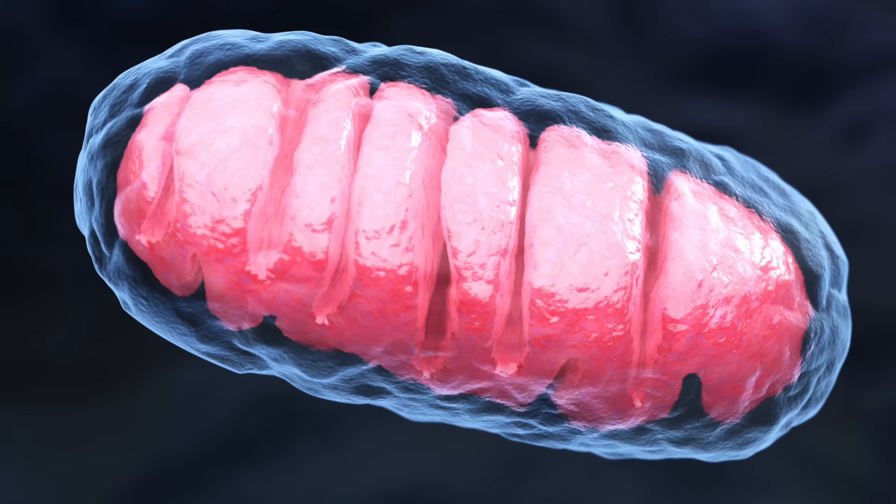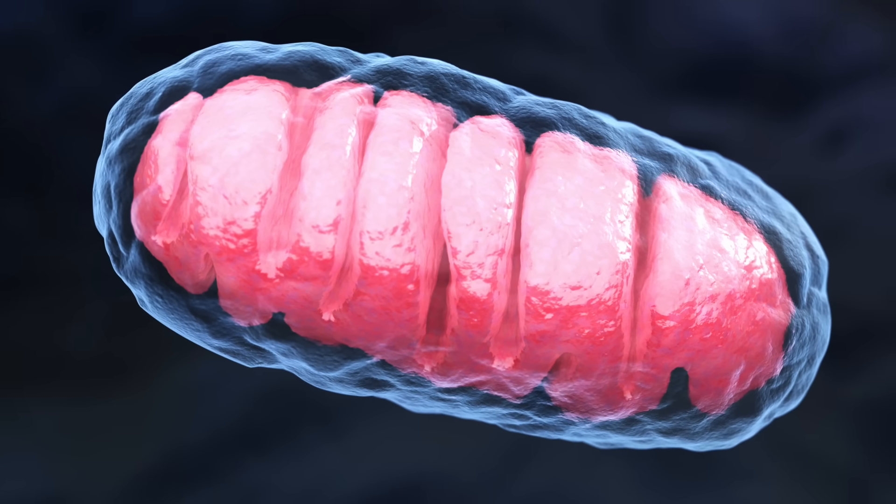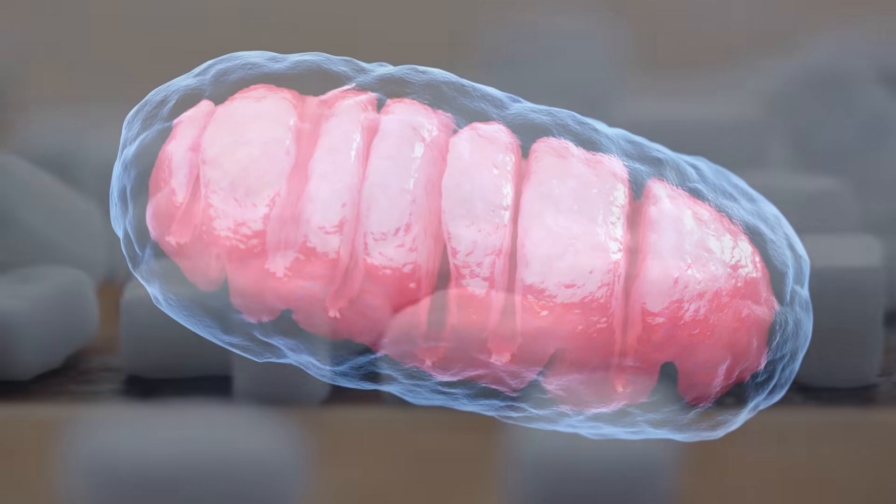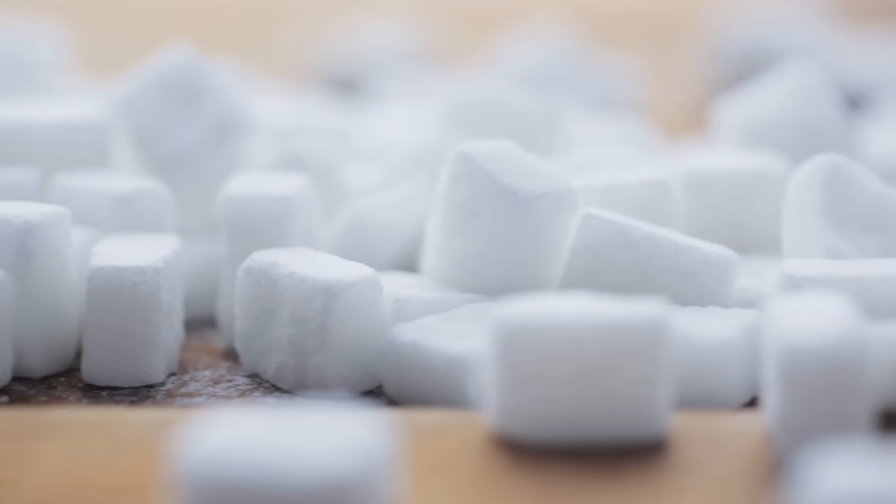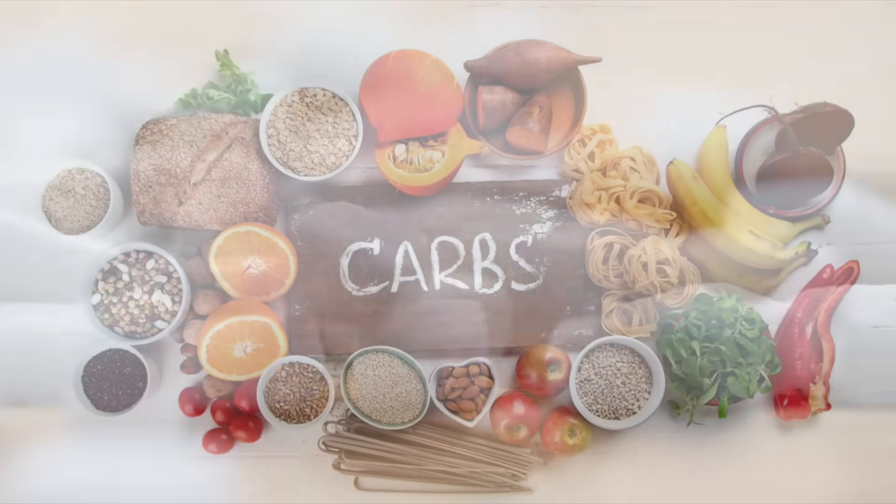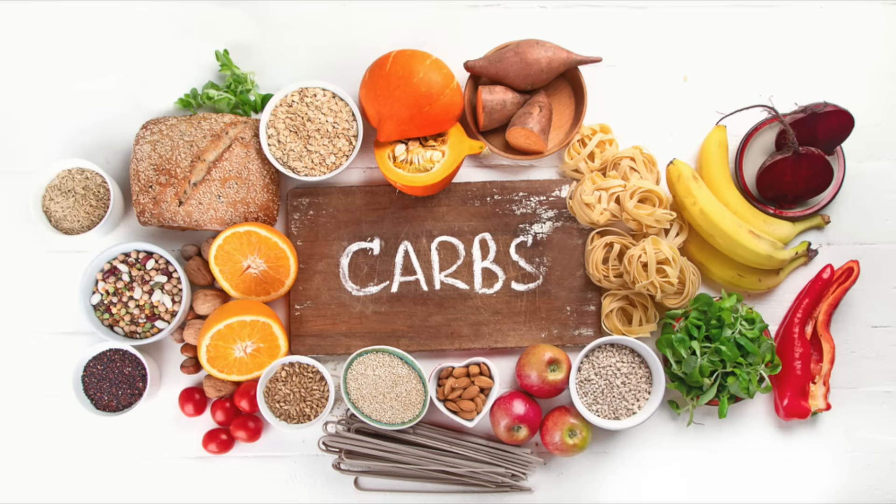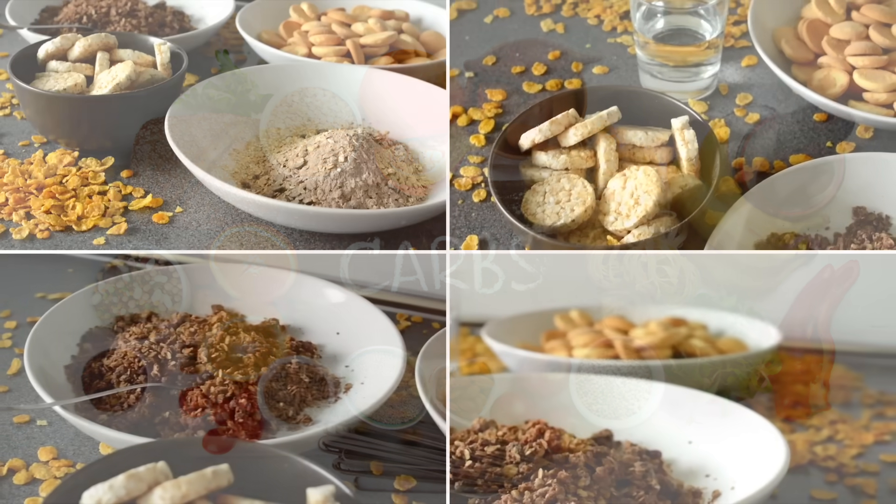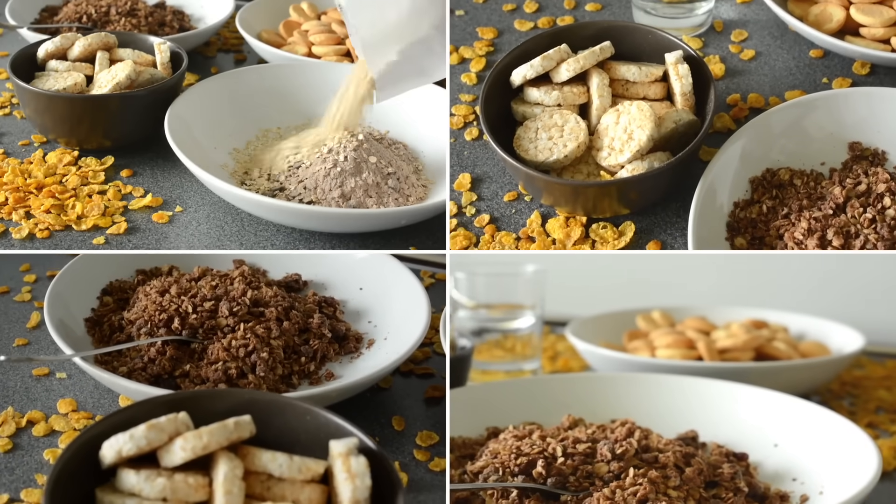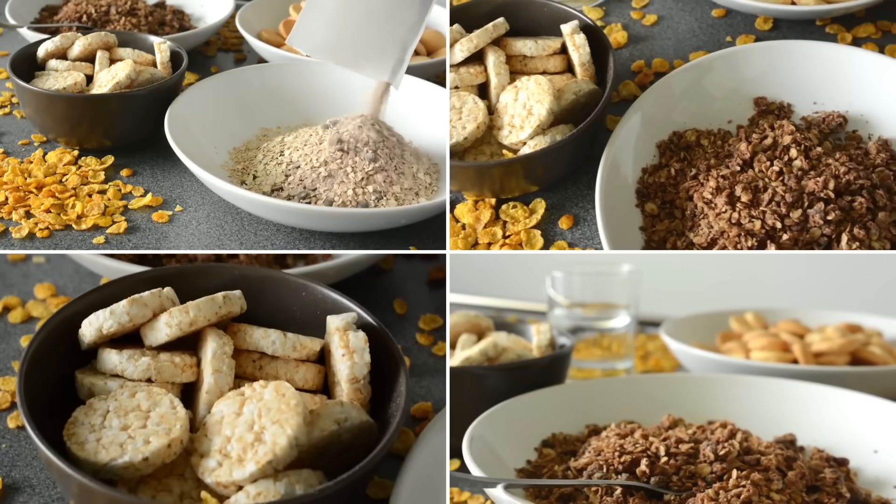There are a lot of things that destroy the mitochondria, but at the top of the list is sugar and foods that turn into sugar very quickly, like refined carbohydrates, like starches, breads, pasta, cereal, crackers, biscuits, waffles, pancakes, muffins, things like that.